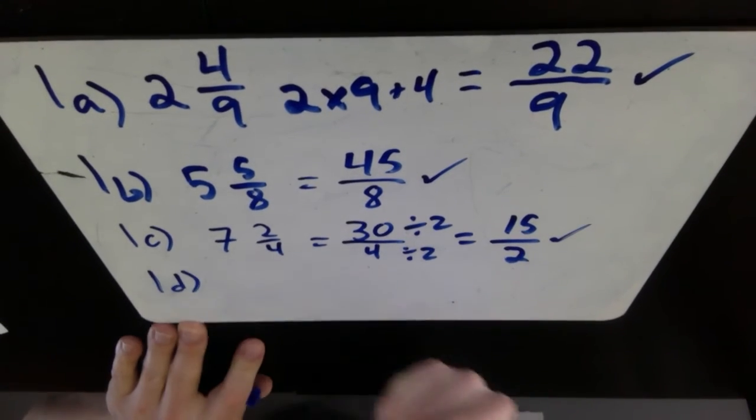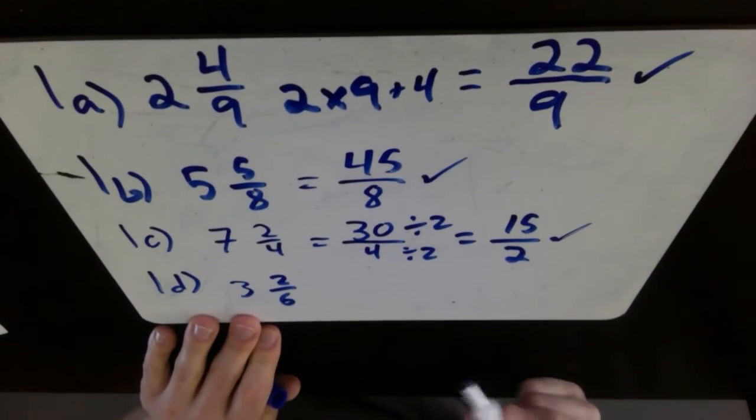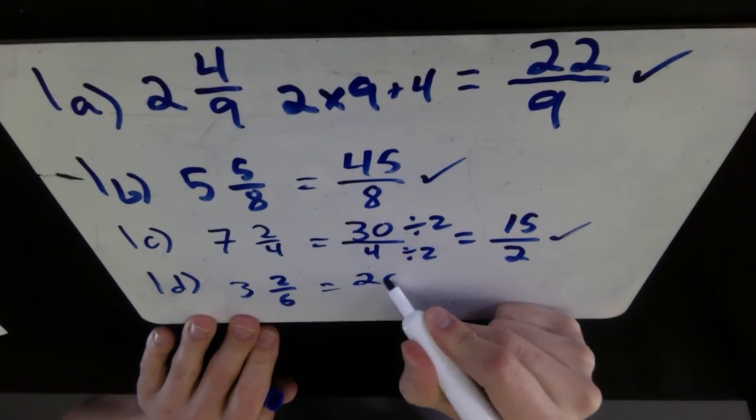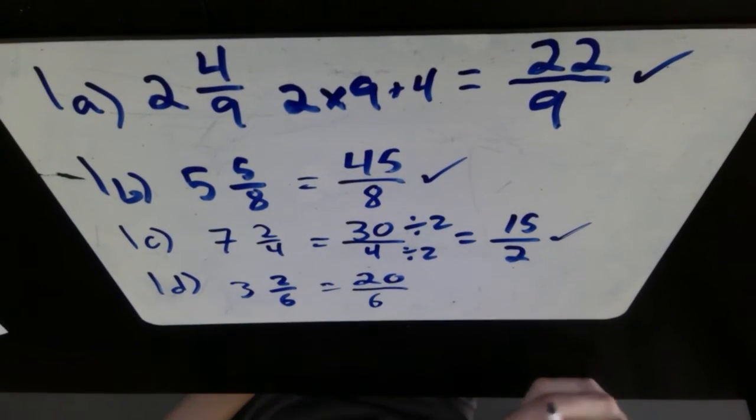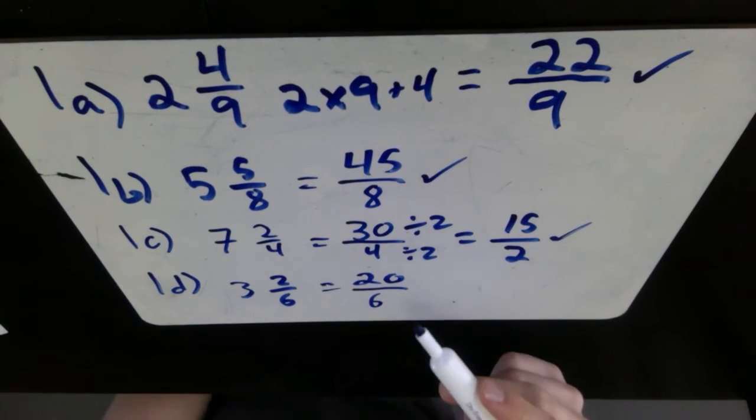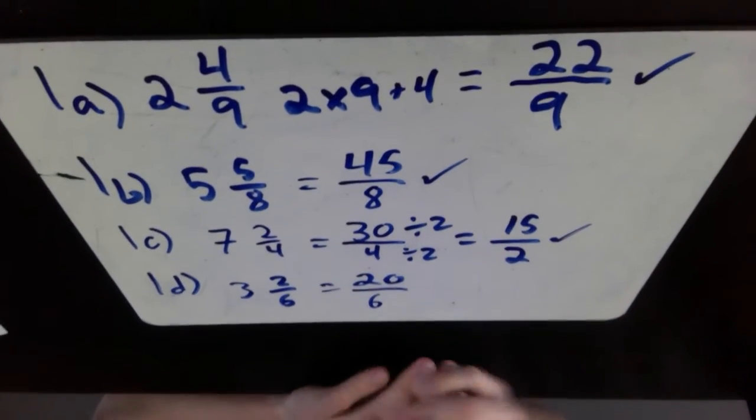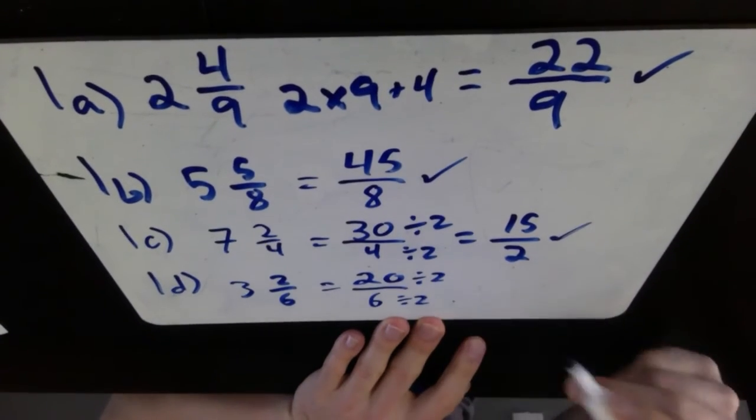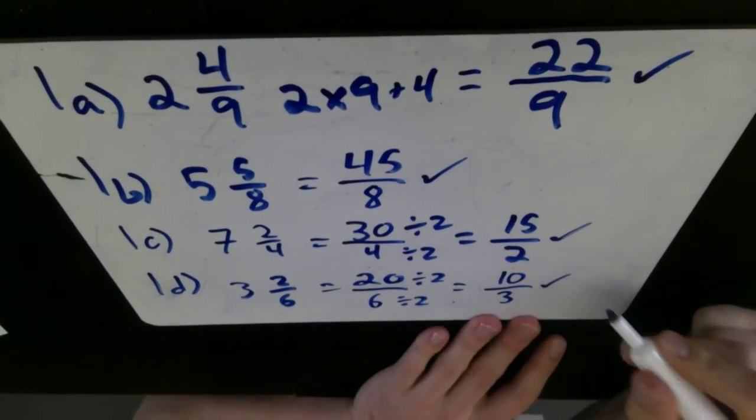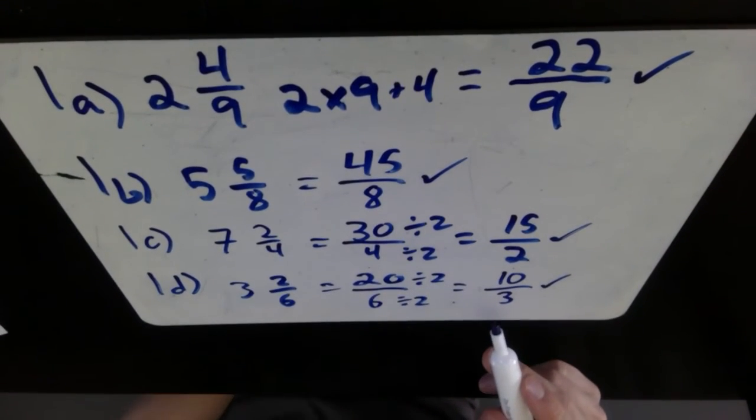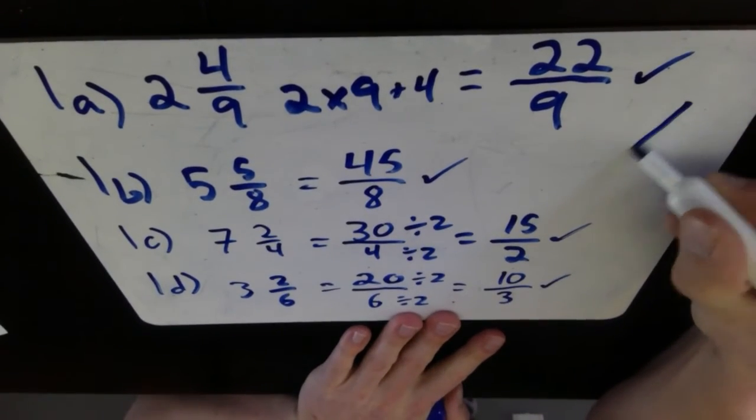1D, last one here in 1. We have 3 and 2 over 6. So 3 multiplied by 6 is 18, plus my 2 is 20. We have 20 over top of, keep our denominator the same as 6. Once again, there is a number that we can divide both into 20 and into 6. This is not reduced yet. What's a number that can go into both 20 and into 6? Start with dividing by 2. 20 divided by 2 is 10, 6 divided by 2 is 3. So final answer there, 10 over 3. Once again, if you had it here and you didn't finish and put it in the simplest form, give yourself a half mark there. So your total in 1 for A, B, C, and D is a mark out of 4.